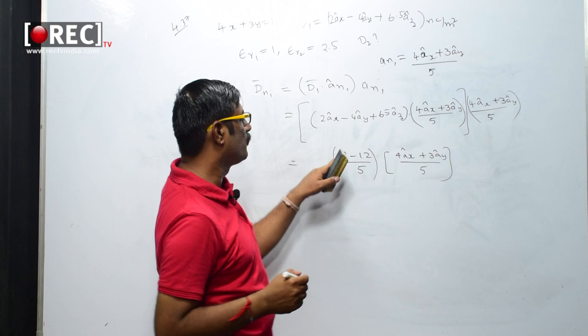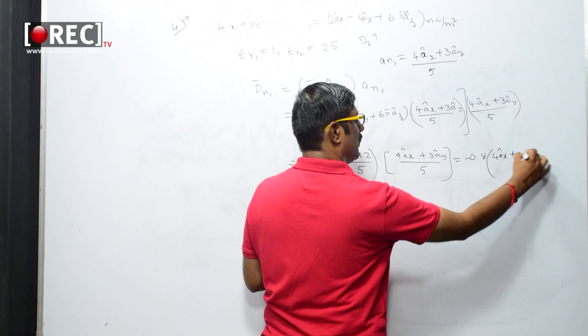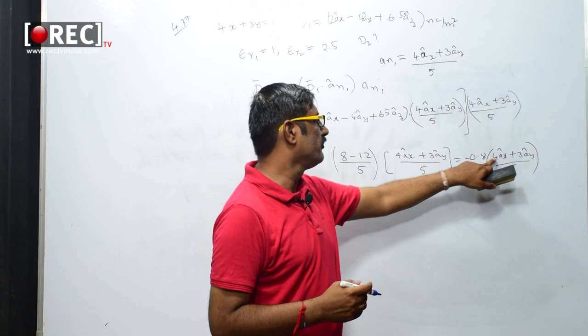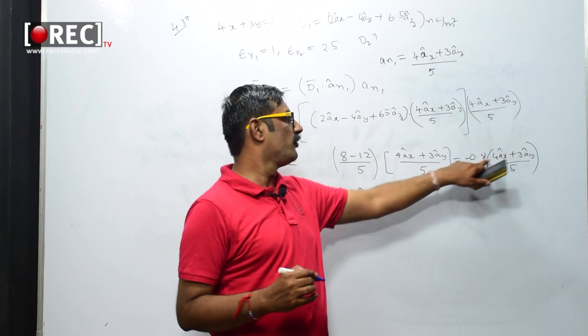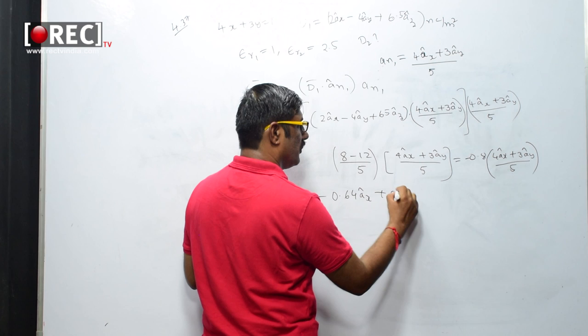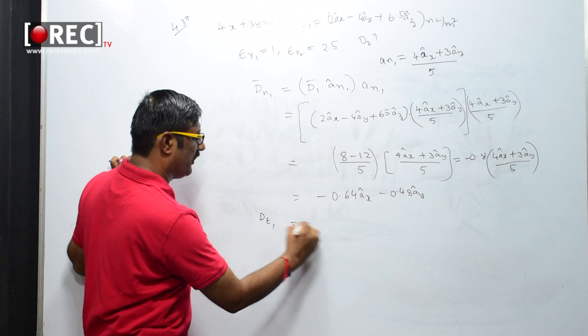Evaluating: -0.8 × 4/5 = -0.64 and -0.8 × 3/5 = -0.48. Therefore D_N1 = -0.64âx - 0.48ây nC/m².